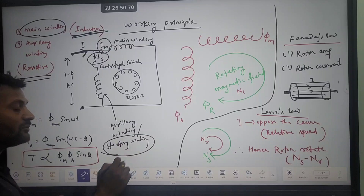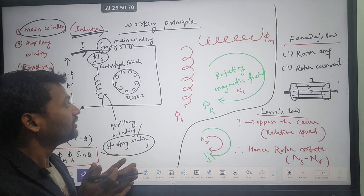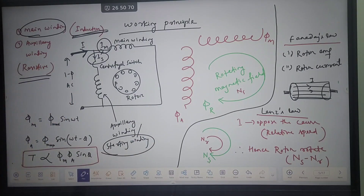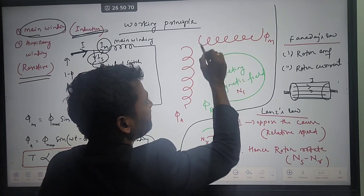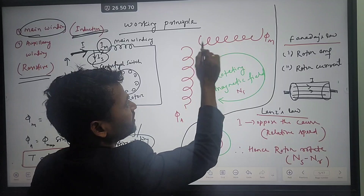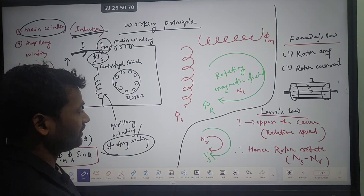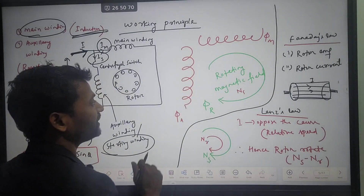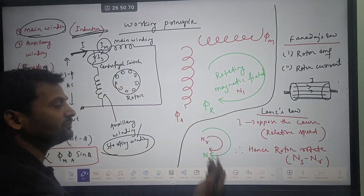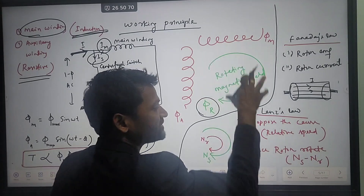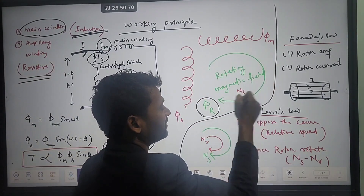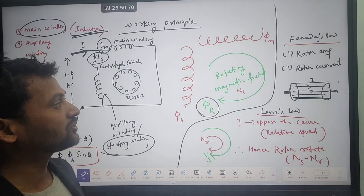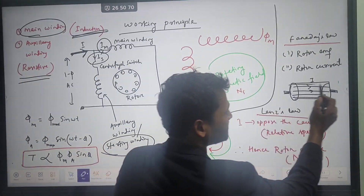The starting winding is used to split the phase — by using this winding we can make a revolving magnetic field. There are two windings: main winding and auxiliary winding, with 90 degrees between them. Due to the interaction between these two field windings, a rotating resultant magnetic field is developed. This imaginary magnetic field revolves. Now, if we keep a conductor inside this rotating magnetic field, as per Faraday's law of electromagnetic induction, an EMF will be induced.